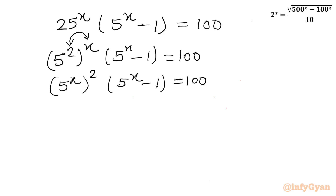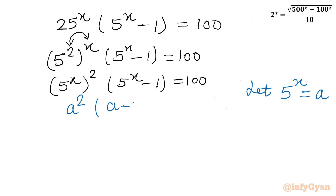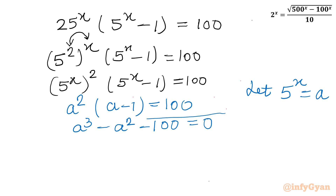Let's consider substitution. Let 5^x = a. So I will write a^2 × (a - 1) = 100. Multiplying out: a^3 - a^2 - 100 = 0. This is a cubic equation and I will solve it using the factorization method.